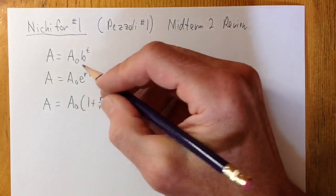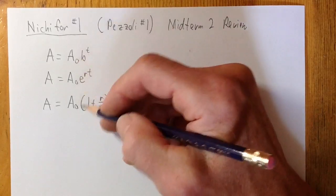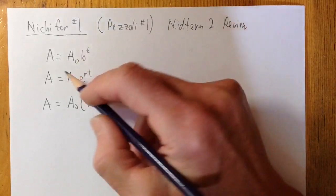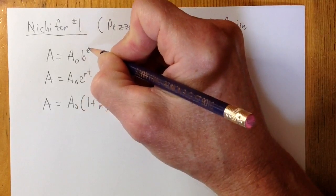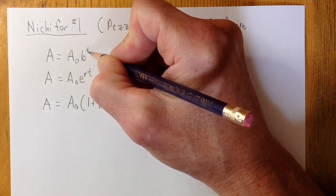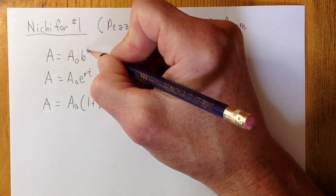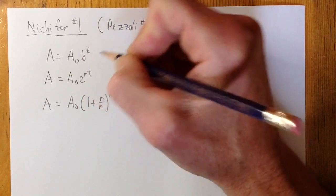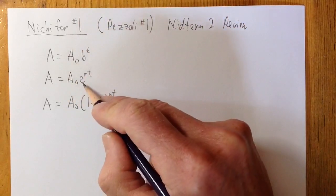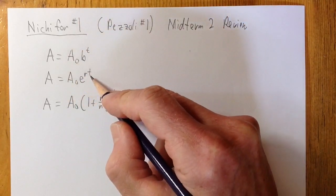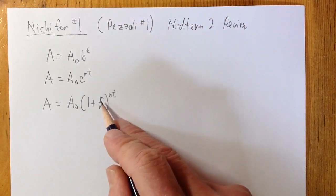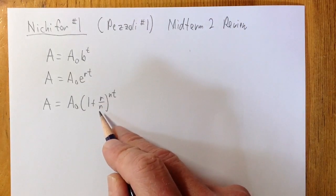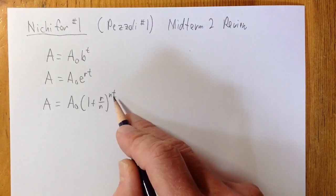Whenever you have exponential growth, you basically have three formulas you can use. You can use a₀ times some base to the t — exponential means the time or x is in the exponent. Or you can use a₀e to the rt, or you can use a₀ times (1 plus the rate divided by n) to the nt.